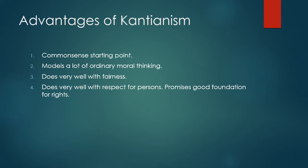Finally, Kantianism does very well with respect for persons, which is baked into the very idea of the formula of humanity. If you use a person as a mere means, Kantianism says those actions are always forbidden. Certain ways people always deserve to be treated — you don't use them as an organ bank, you don't cut them up for their organs, you don't use them as a conveniently heavy object to stop a train. There are certain things you never do to another human being. That's what respect for persons means, what the very idea of rights means. It does a lot better in this respect than utilitarianism.